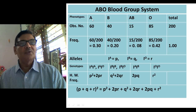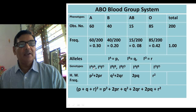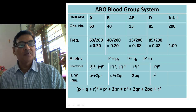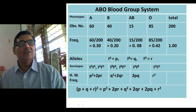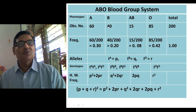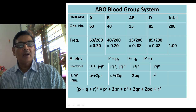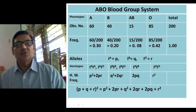Individuals with blood group A are genotypically IAIA or IAIO — they could be homozygous or heterozygous. Individuals with blood group B are genotypically IBIB or IBIO. Those with blood group AB are genotypically IAIB, and individuals with blood group O have genotype IOIO.